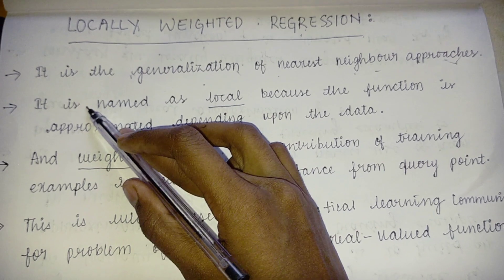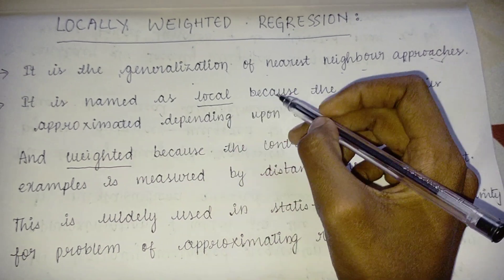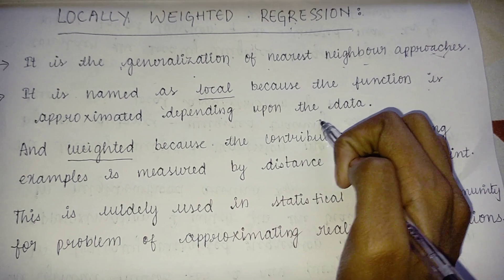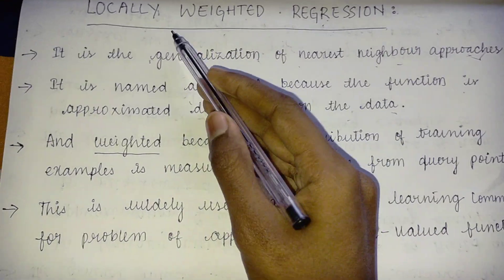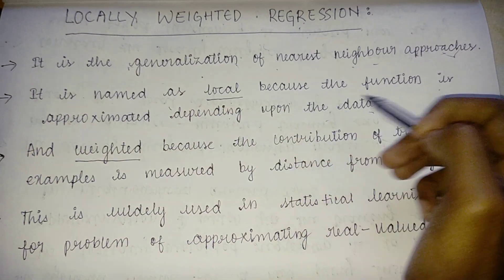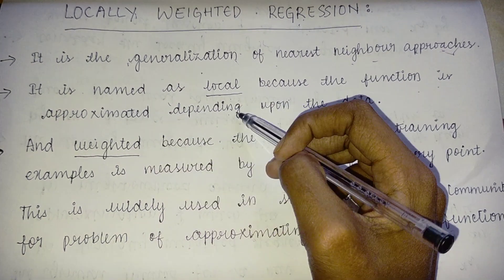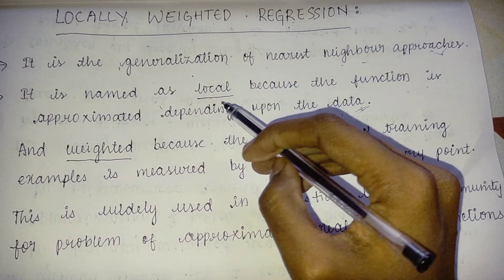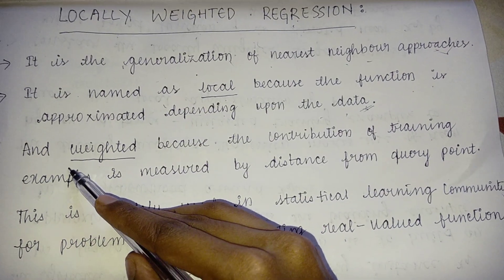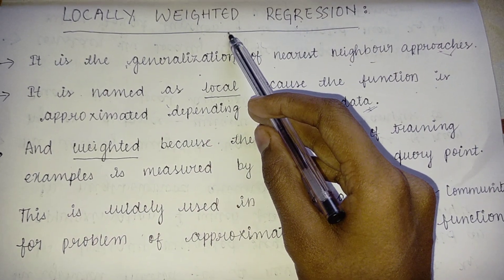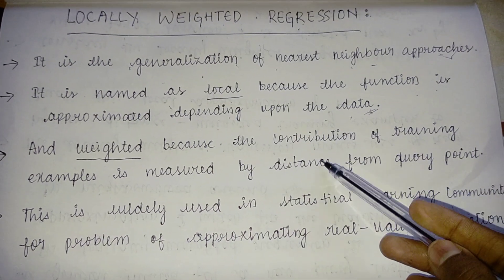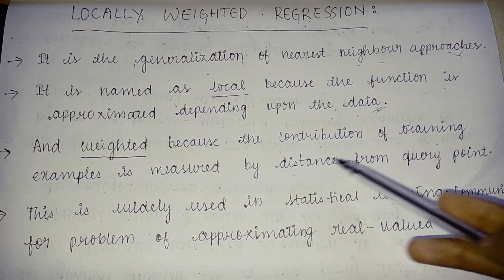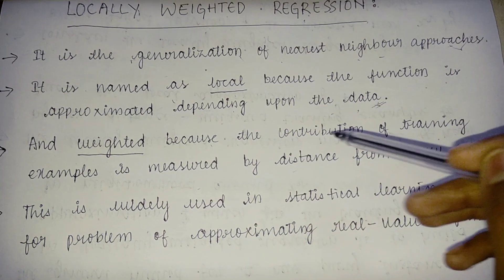It is named as 'local' because the function is approximated depending upon the data — that is why it is named as local. It is named as 'weighted' because the contribution of training examples is measured by distance from the query point.